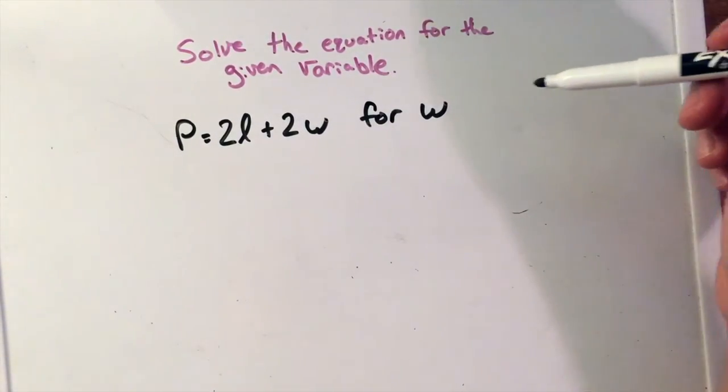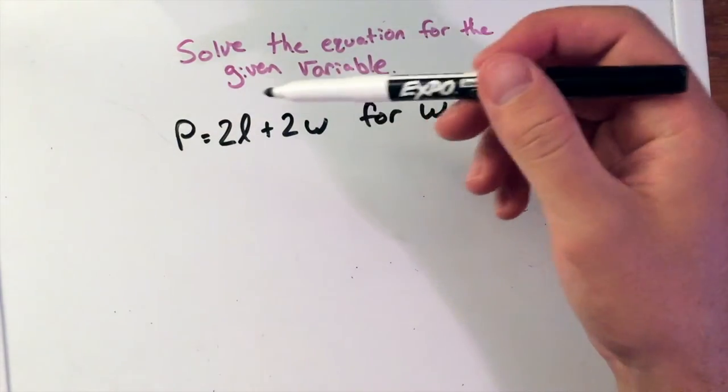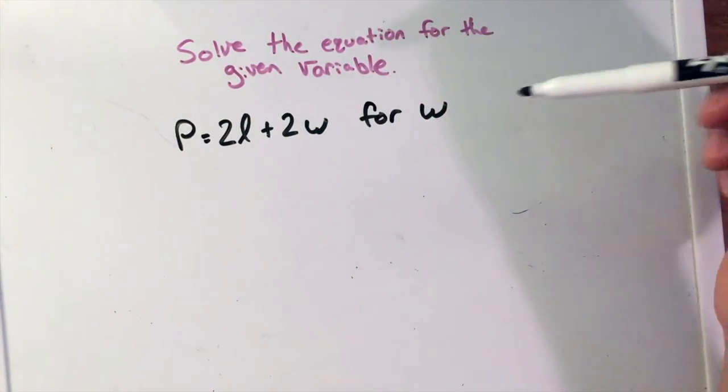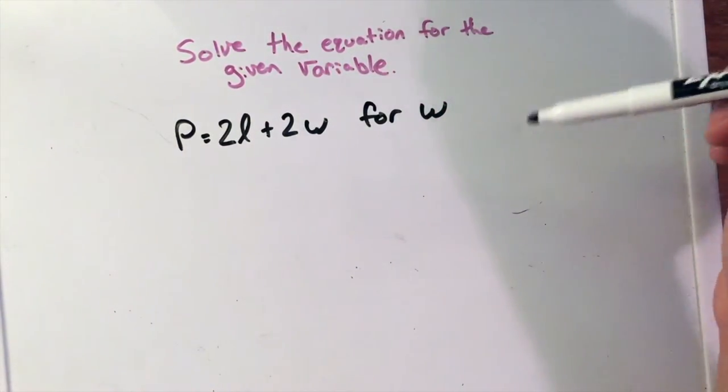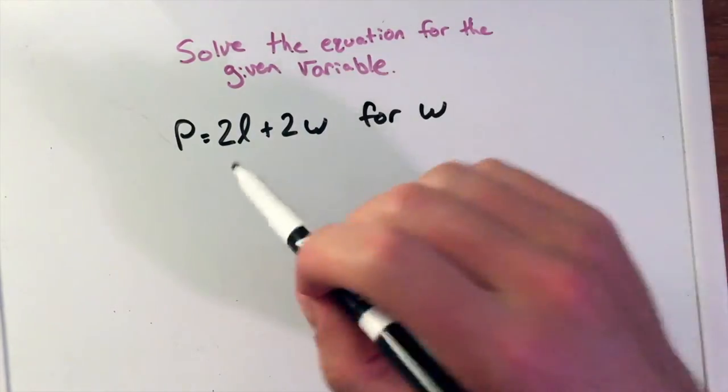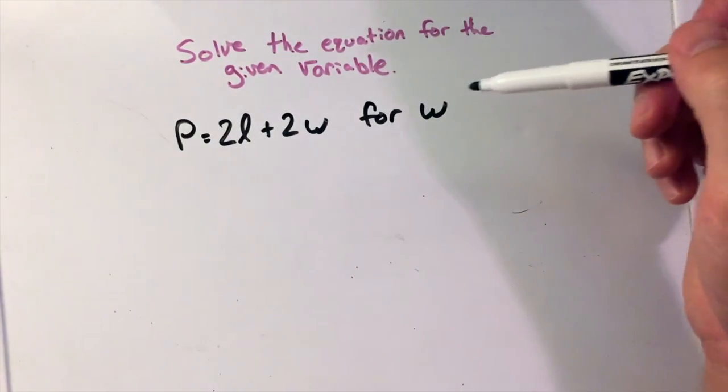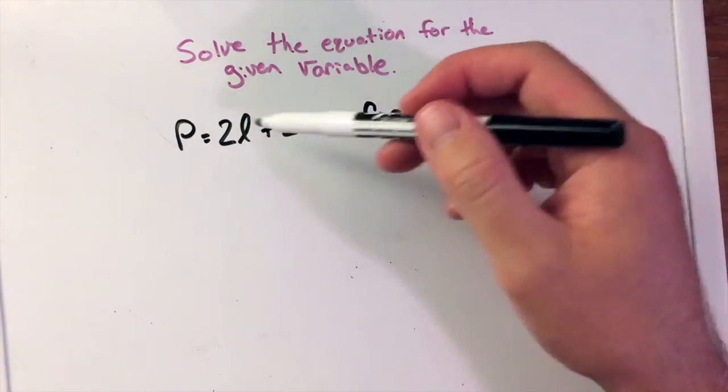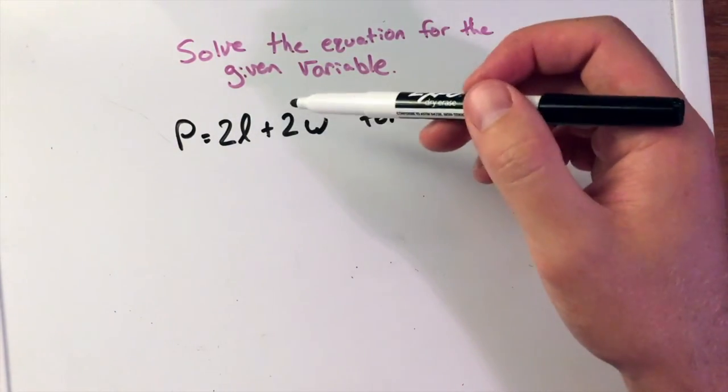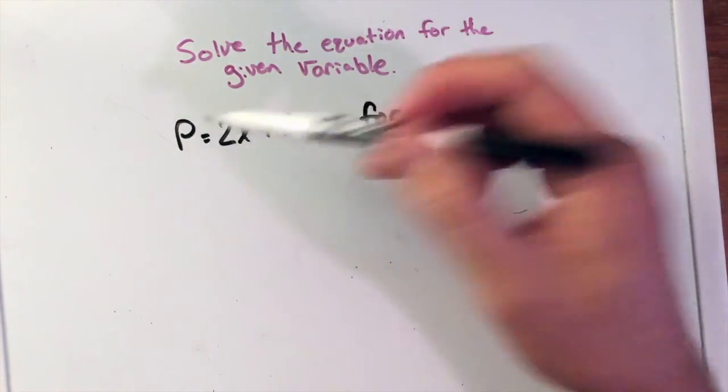We're going to solve the equation for the given variable. We have P equals 2L plus 2W and we want to solve for W by itself. Now you might recognize this equation. It's a formula for the perimeter of a rectangle. Length and width, two times length plus two times the width equals the perimeter P.